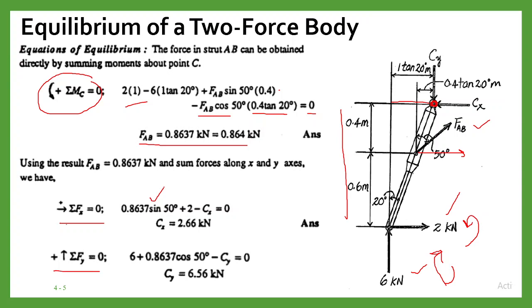In the x-direction we have Cx, a component of FAB, and the 2 kN force. Writing the equation: 0.8637 × sin 50° + 2 (same direction) minus Cx = 0, giving Cx = 2.66 kN. Similarly in the y-direction we have the 6 kN force, the component FAB × cos 50°, and Cy, giving Cy = 6.56 kN. This is how we solve problems of equilibrium of a two-force body.